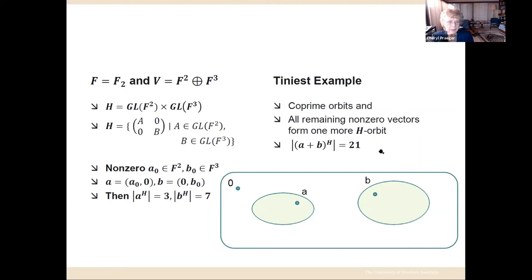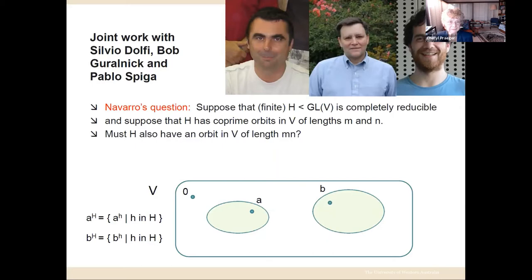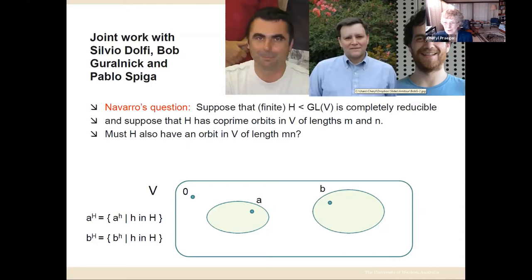Where did the question come from? I had a sabbatical visit from an Italian mathematician, Silvio Dolfi from Florence. At the same time Pablo Spiga, who is now in Milano, was working at UWA as a postdoc. Later in the project we enlisted the help of Bob Guralnick from USC. At the beginning it was Silvio, Pablo, and me. Silvio said that his colleague Gabriel Navarro had asked a question.